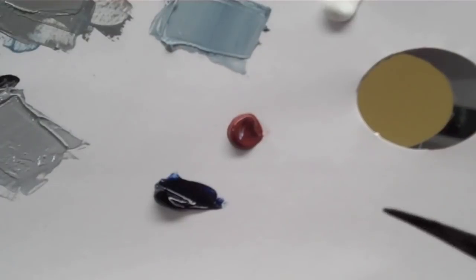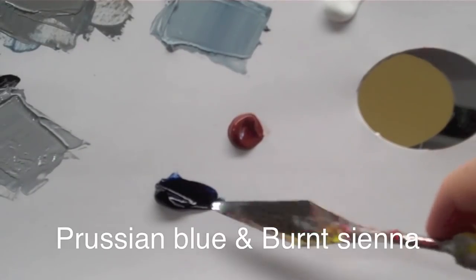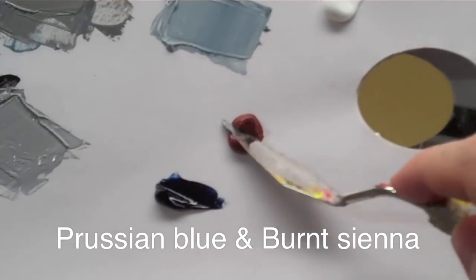You can also mix Prussian blue with other earth colors such as burnt sienna, burnt umber, or umber, and you will also get a color pretty close to black. So this is some Prussian blue with a bit of burnt sienna.